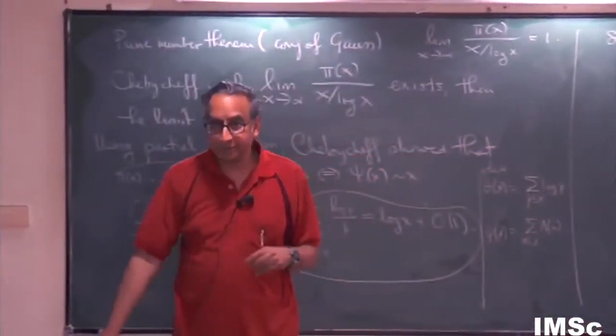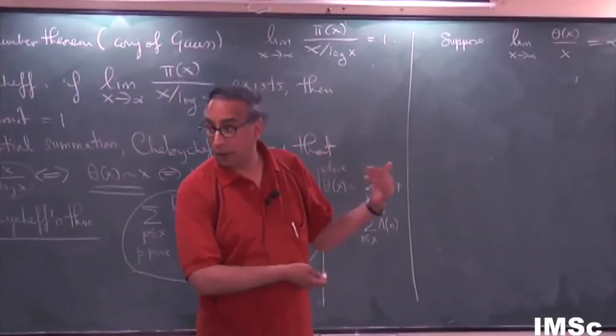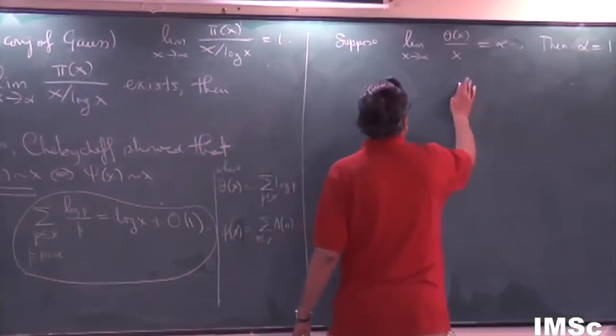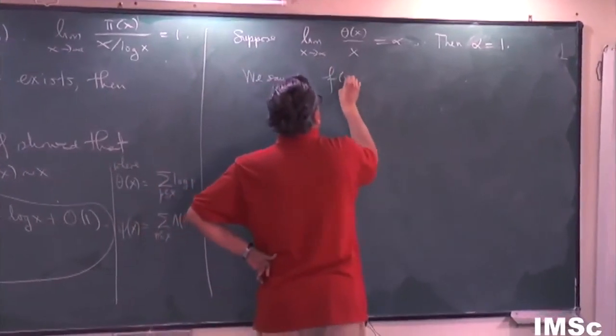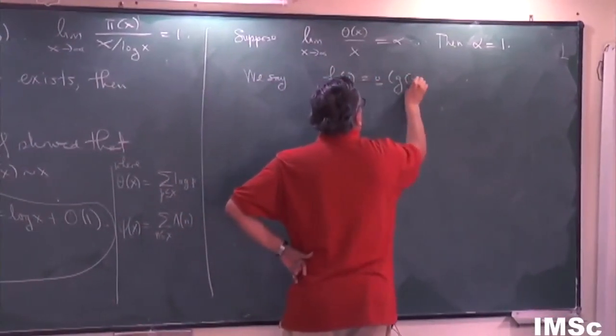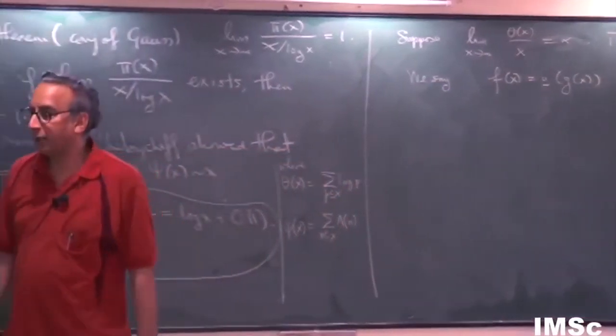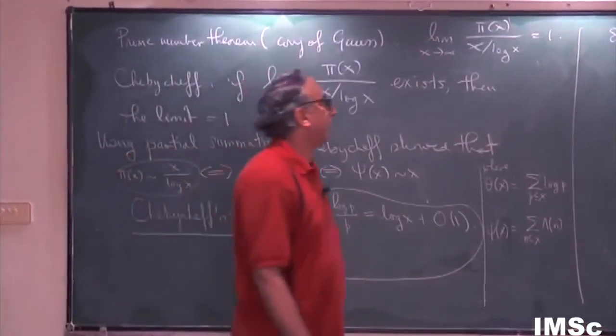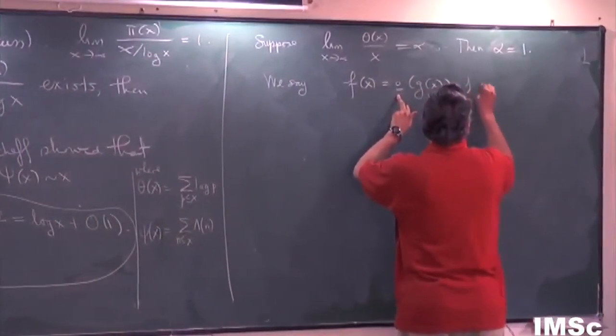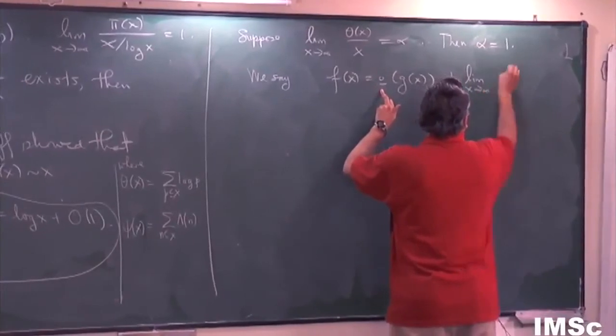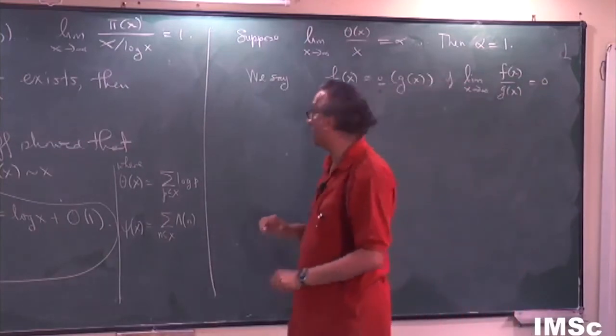Last time, I introduced the big O notation, which was very convenient for calculations. This time, I'm going to introduce little o notation. So we say, it's very convenient to use it. We say f(x) equals little o of g(x)—I put a dash under o because sometimes people make O's big, and then that would be confusing. So when I put a little dash, at least I know I'm talking about little o. So we say this if the limit as x goes to infinity of f(x) over g(x) is zero.